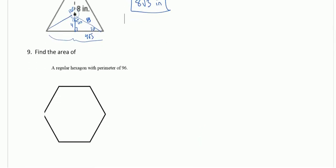Number 9, finding the area of a regular hexagon with a perimeter of 96. If the perimeter is 96, then the side length is 96 divided by 6, because it's a regular hexagon with 6 equal sides. We end up with each side being 16. From the center, if I draw a triangle, the central angle is 60 degrees. And we know it's isosceles, so we have an equilateral triangle — 60, 60, 60 — with each side length 16.